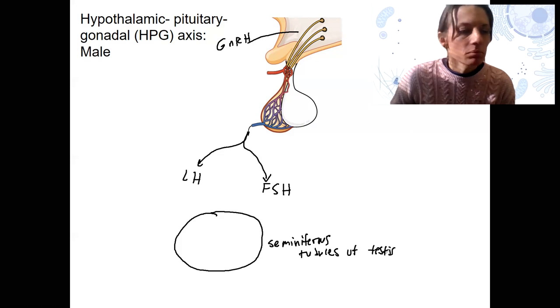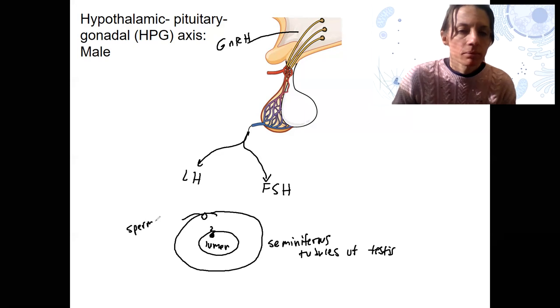And you remember that there is this lumen in the middle, of course. It's an empty space. And that's where the developed sperm end up. Back over here, we have the spermatogonia, the stem cells that are going to develop into the sperm via primary and secondary spermatocytes.